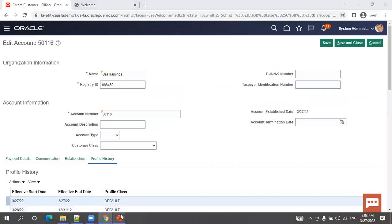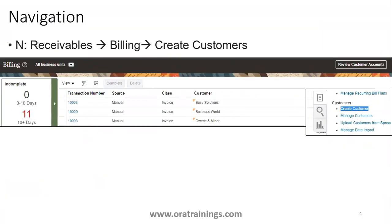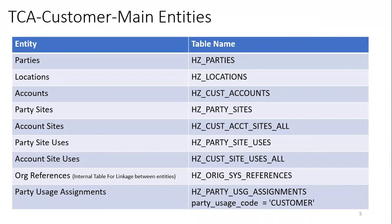Now for a quick overview of the tables involved — useful when designing BI/OTBI reports. For parties, details are in the HZ_PARTIES table, with party_id as the primary column, along with party_name and party_number (which is the registry ID). Next is HZ_LOCATIONS for location information. Then HZ_CUST_ACCOUNTS, linked to the parties table via party_id. For party sites and party site users, there are corresponding HZ_ACCOUNT_SITES and account site user tables. These party tables are used across many entities — not just customers, but also suppliers, legal entities, and banks. When using HZ_PARTIES, also join the party usage assignment table and filter by party_usage_code = 'CUSTOMER' to get only customer party information.